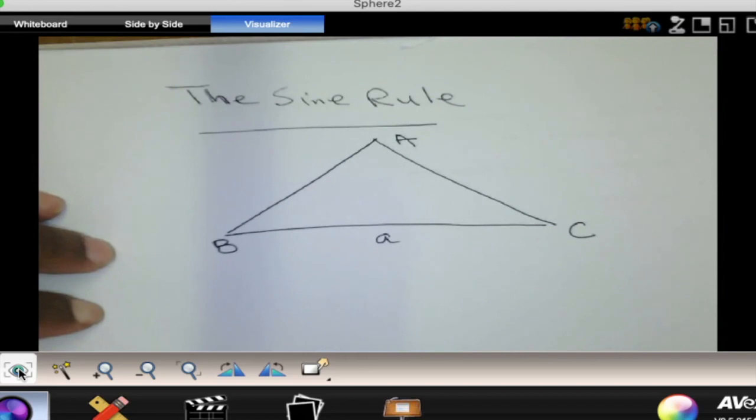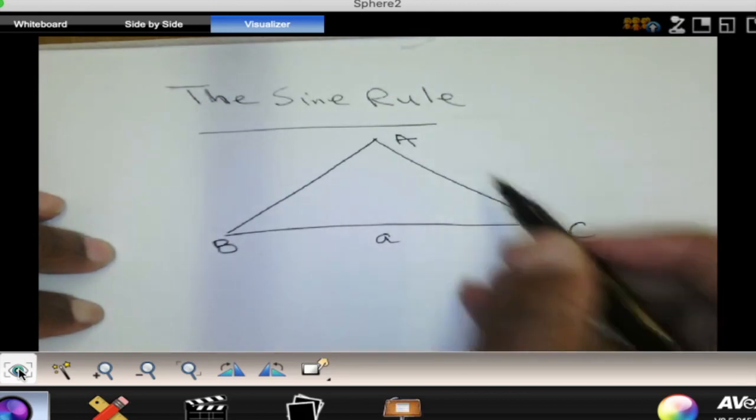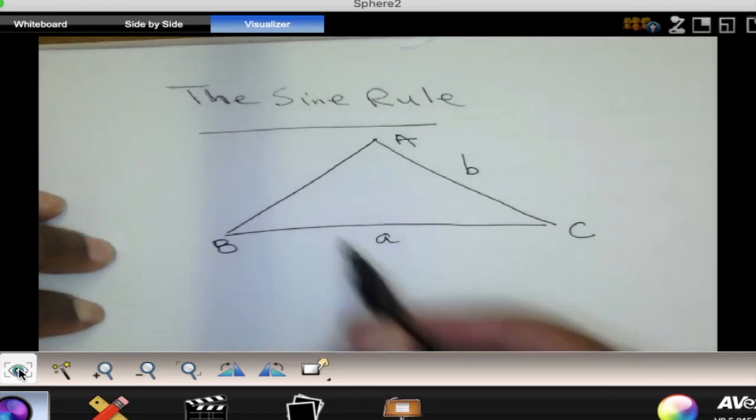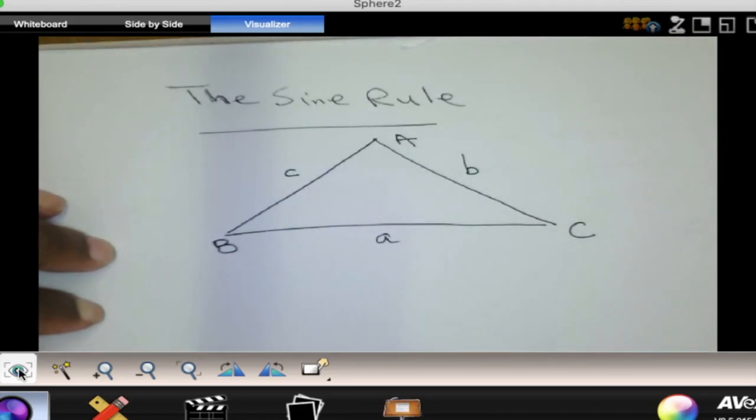And if this is angle B, then the length of AC which is the opposite side there is denoted by the small letter b. And then the other one there is denoted by the letter c.